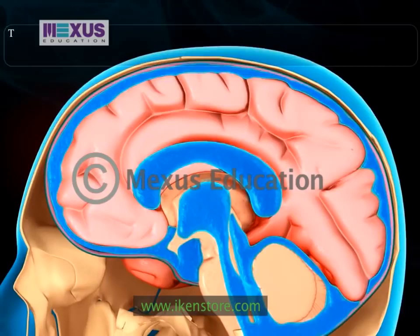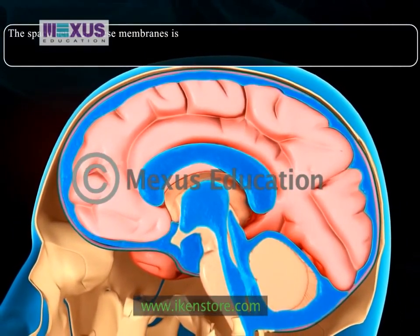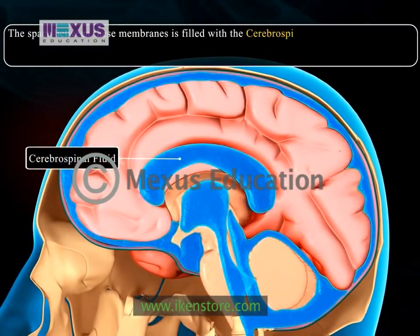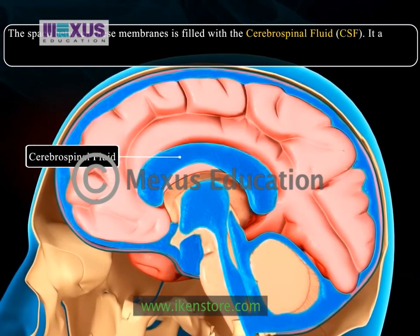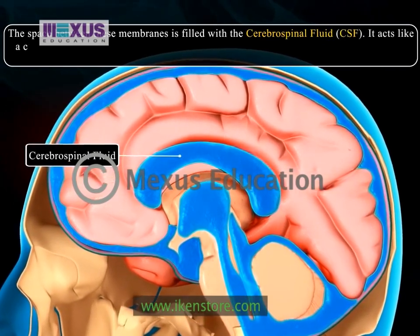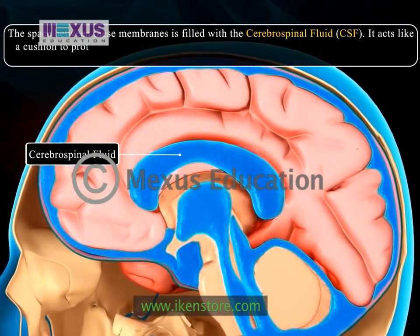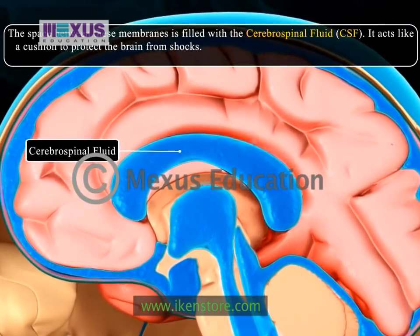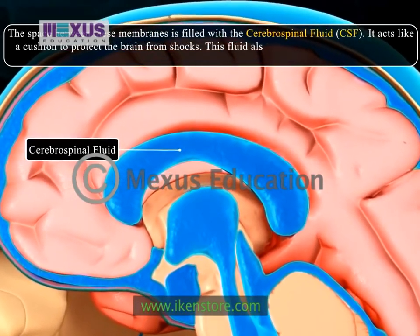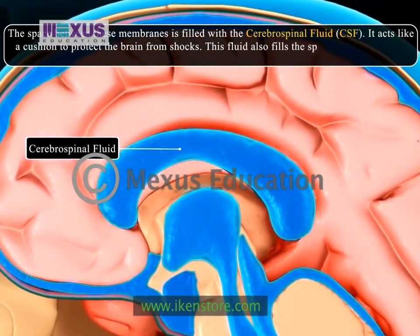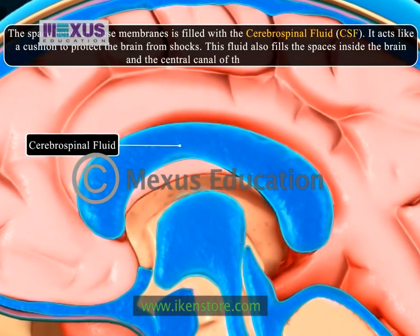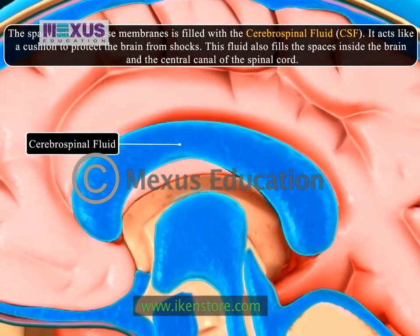The space between these membranes is filled with cerebrospinal fluid, or CSF. It acts like a cushion to protect the brain from shocks. This fluid also fills the spaces inside the brain and the central canal of the spinal cord.